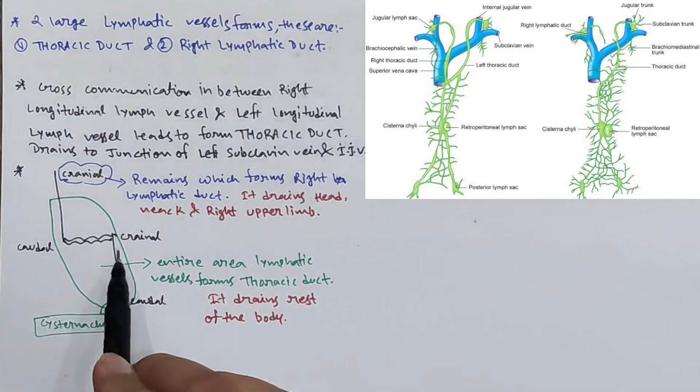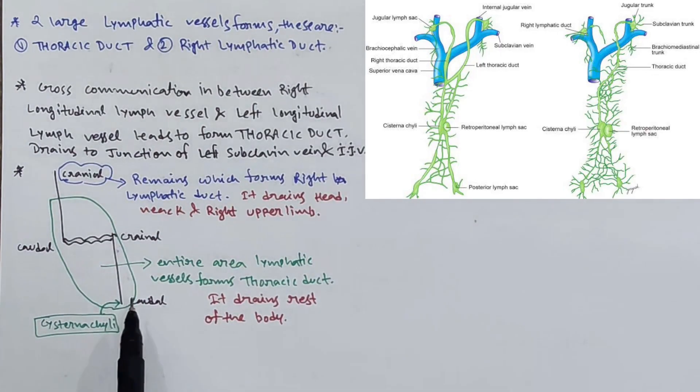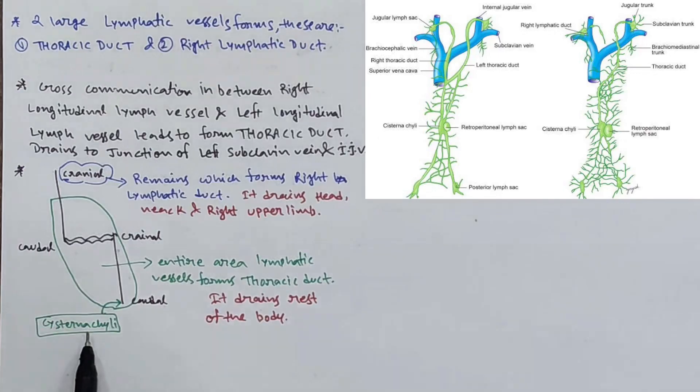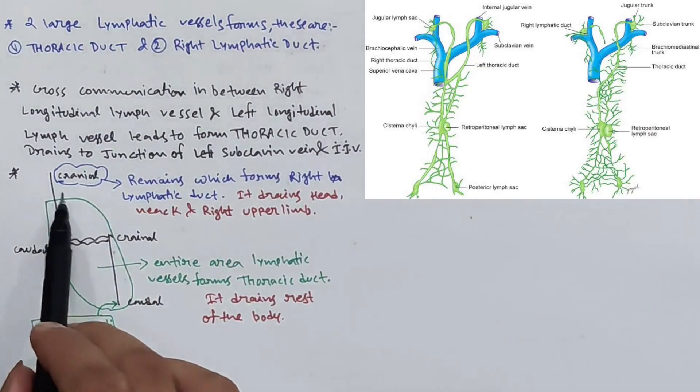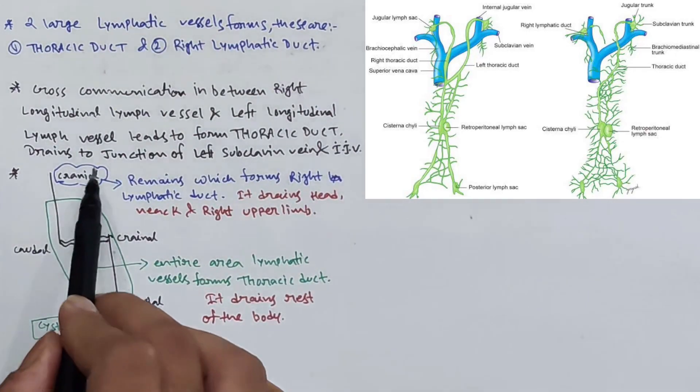The caudal part of the left longitudinal lymph vessel is also contributed by the cisterna chyli of the intestine. The remaining cranial part of the right longitudinal lymph node ultimately forms the right lymphatic duct.